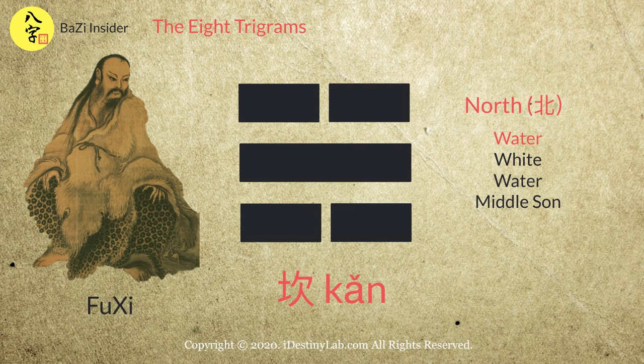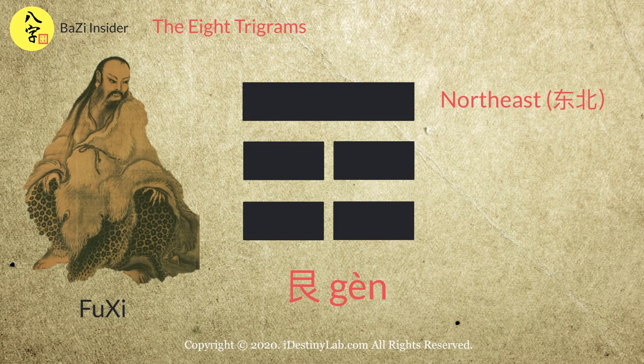The next Gua represents the north direction. It also represents water, white colour, and the middle son. Its 5 elements is water.